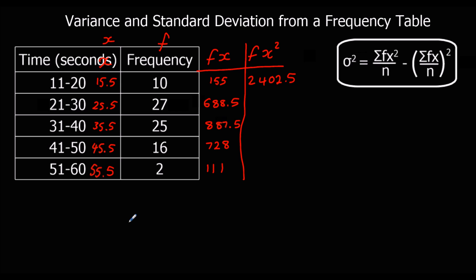And we'll keep going through the table. So next one's 27 times 25.5 squared, 25 times 35.5 squared, 16 times 45.5 squared, and 2 times 55.5 squared.